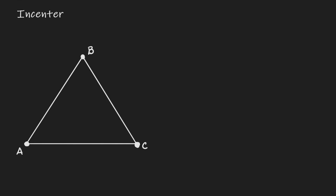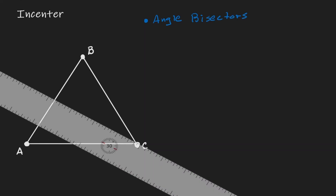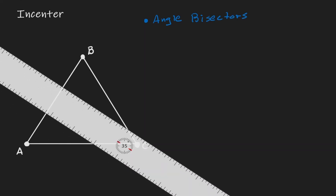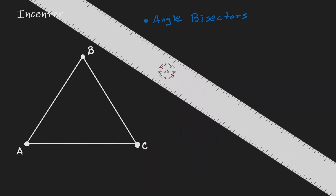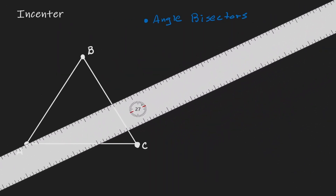To define the incenter of a triangle, we need to draw angle bisectors. So let's consider some angle bisectors, and let's bring a ruler to estimate some angle bisectors.